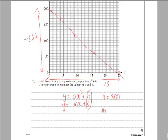So the gradient m is the difference in the y, minus 200, over the difference in the x, which is 25, which turns out to be minus 8. So therefore we can say that y is approximately equal to minus 8x squared plus 200.